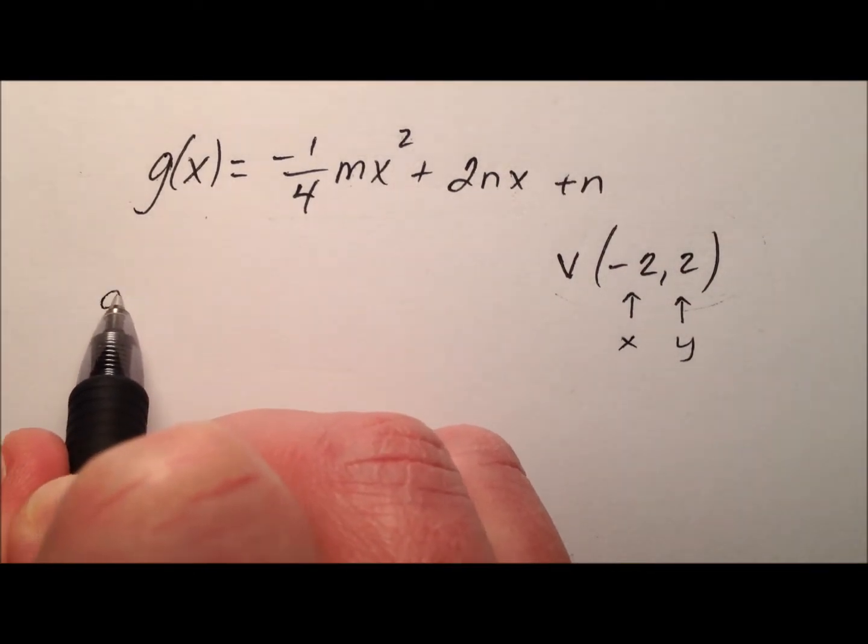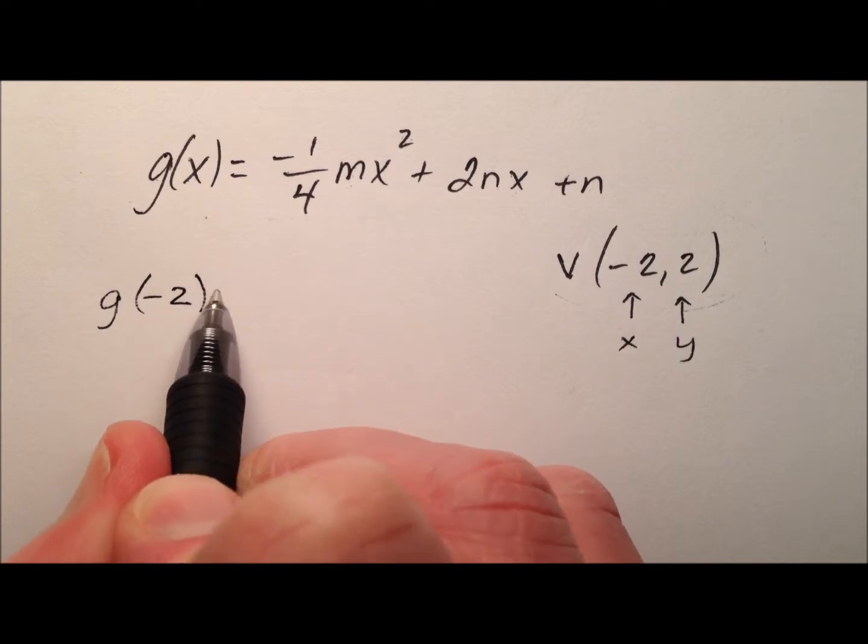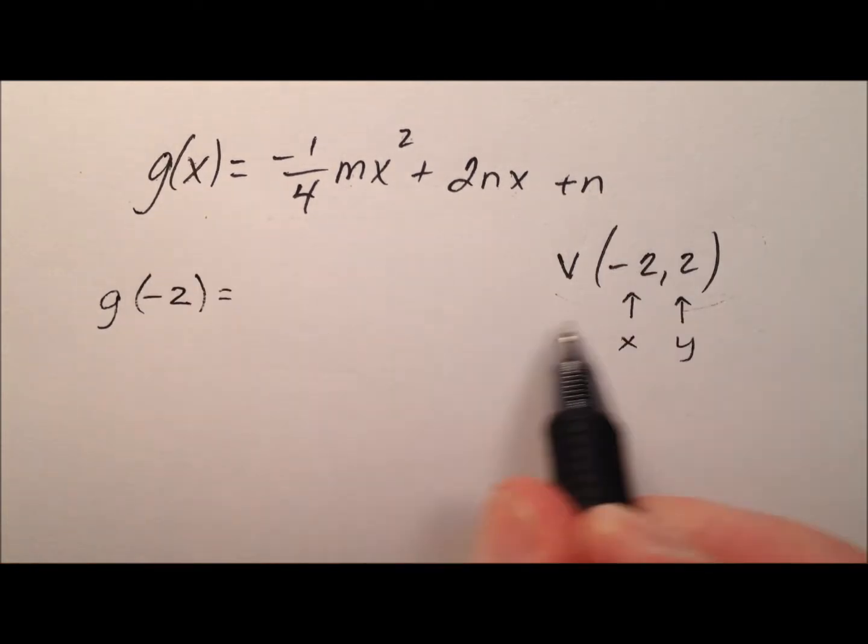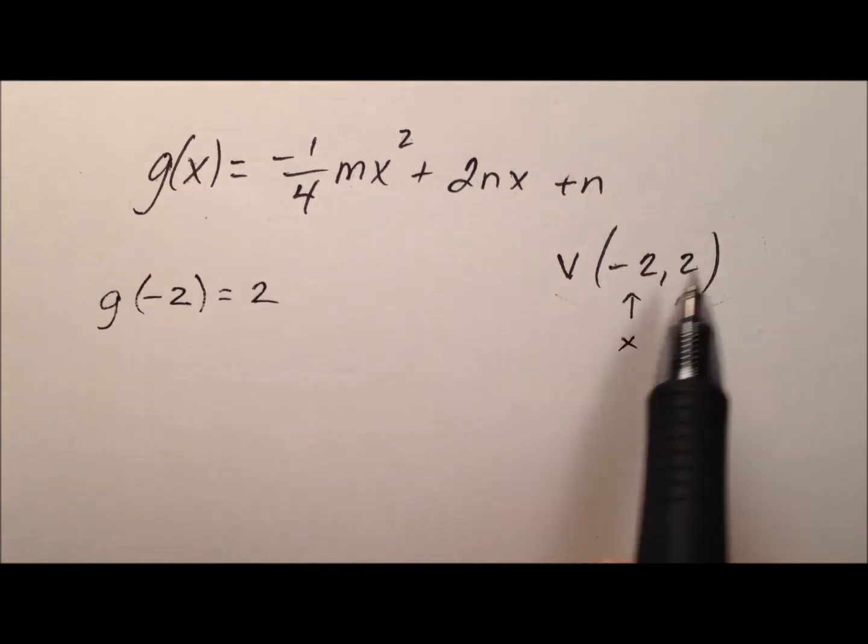So, I know that in my function, if I plug a negative 2 in here, I'm going to get out a positive 2. Input-output.